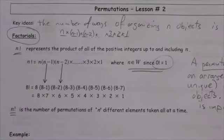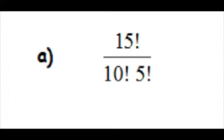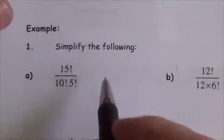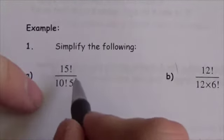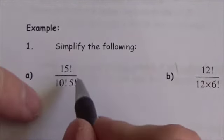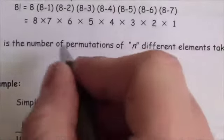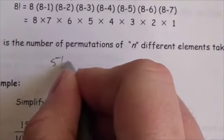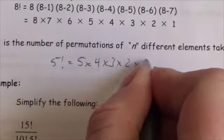Let's look at some examples. Simplify 15 factorial divided by 10 factorial times 5 factorial. Before jumping in, I want to show a little pattern. Let's look at 5 factorial: it means 5 times 4 times 3 times 2 times 1 — all the numbers from 5 down to 1 become factors.